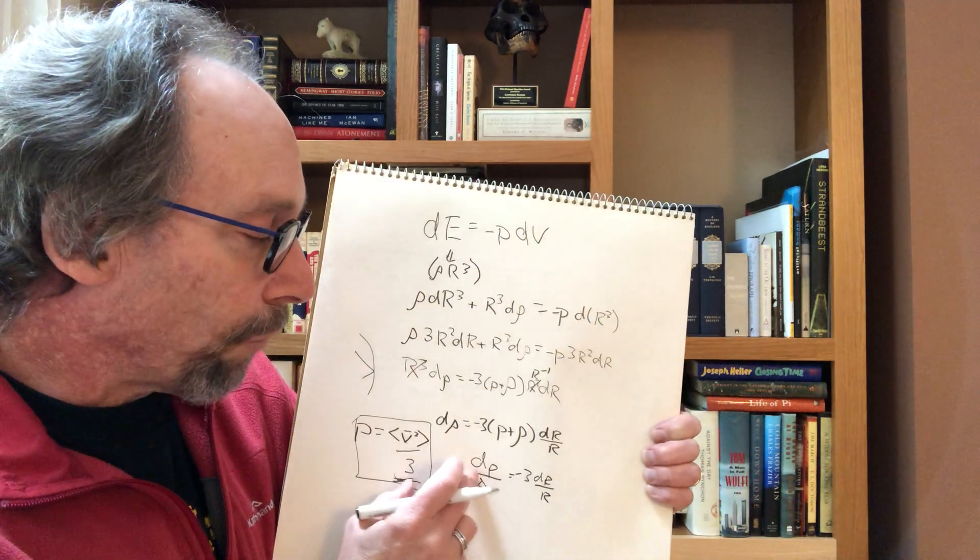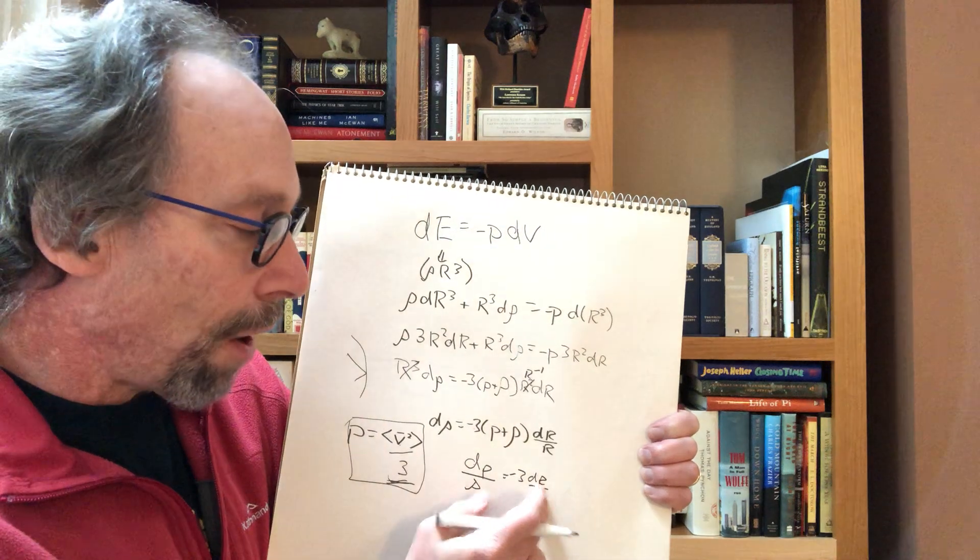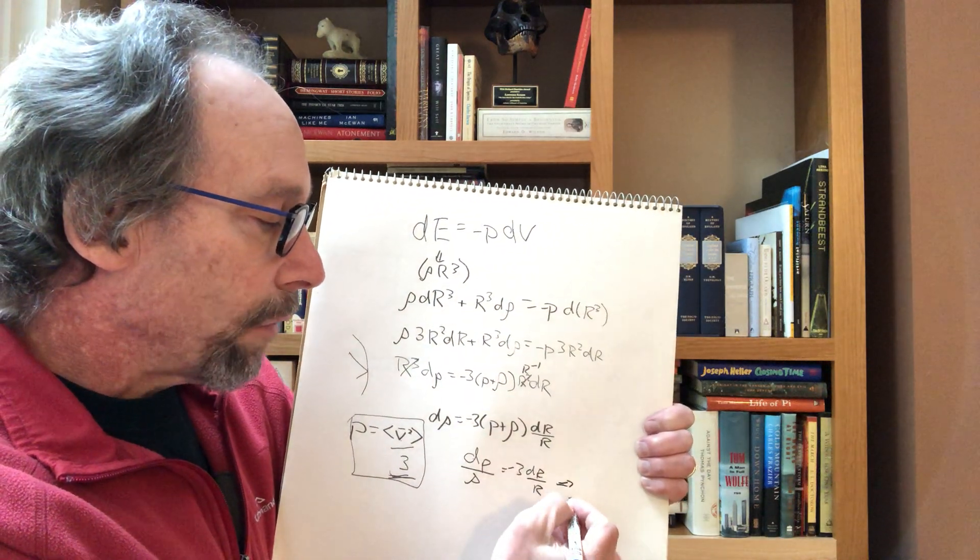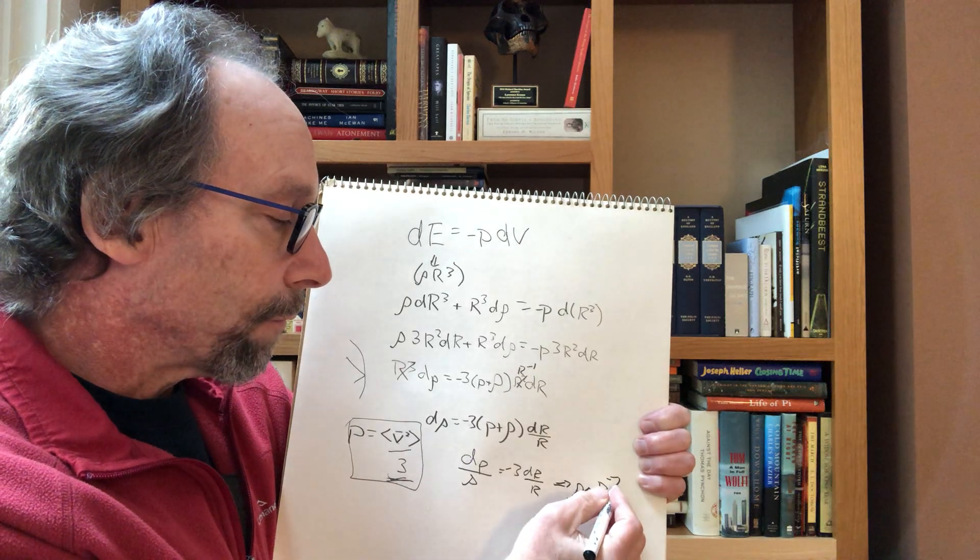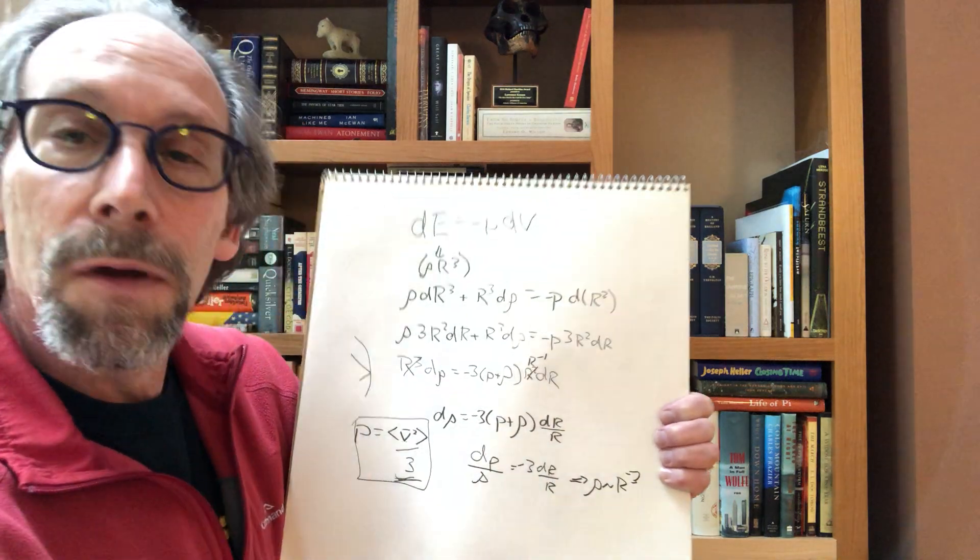and that means the log of rho is minus 3 the log of r, and the solution of that is that rho goes as r to the minus 3.